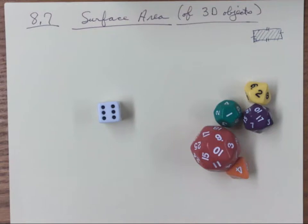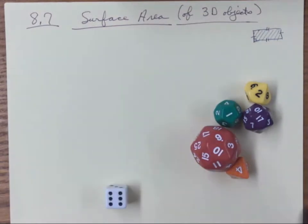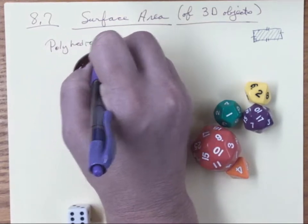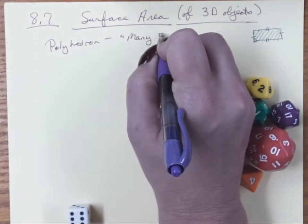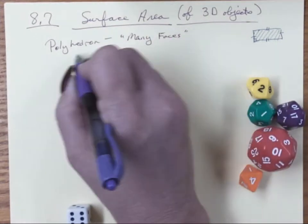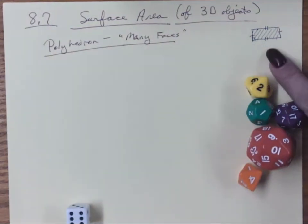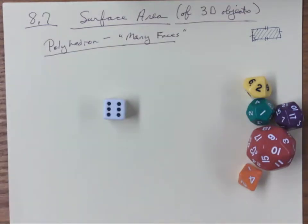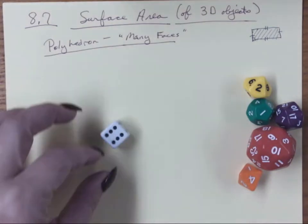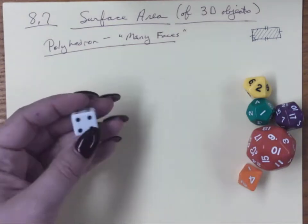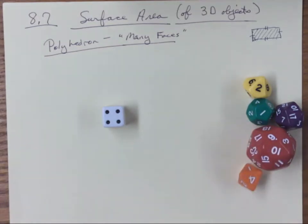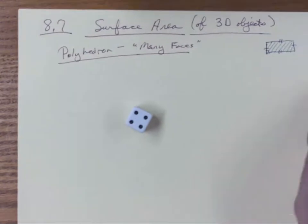Three-dimensional objects like these are called polyhedra. Polyhedron basically means 'many faces' — multiple faces. A two-dimensional object has just one face, but a polyhedron typically has six or more faces. When we look at a die, we call it a six-sided die, but really it's a six-faced die, because every plane on it is its own face.